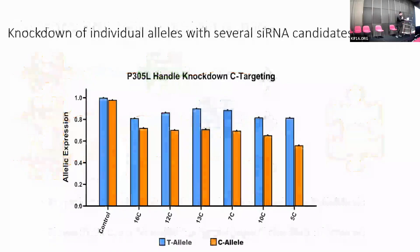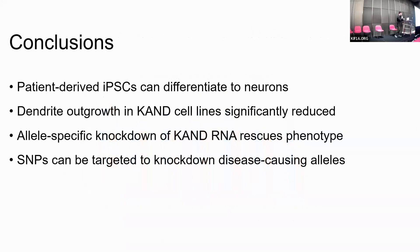We can get preferential knockdown of an allele using the handle approach. To conclude: patient-derived iPSCs — induced pluripotent stem cells — can differentiate into neurons. Dendrite outgrowth in our KAND cells is significantly reduced at our time point. Allele-specific knockdown of KAND RNA rescues that phenotype. And we know that SNPs can be targeted to knock down the disease-causing allele.